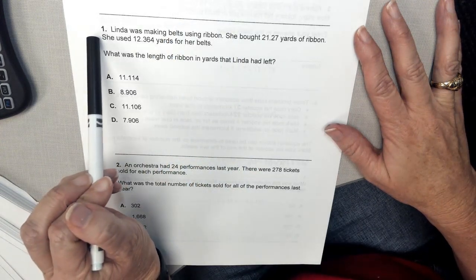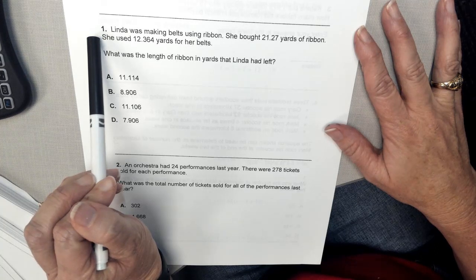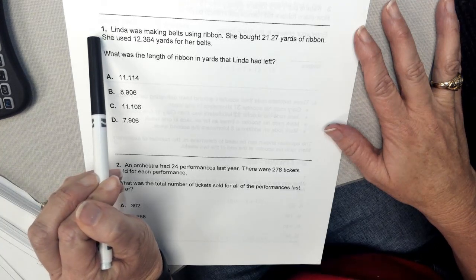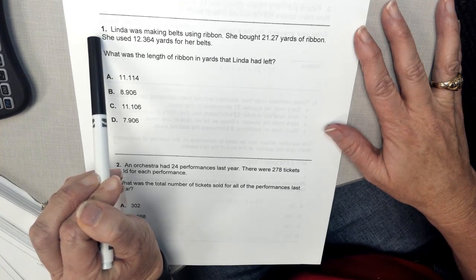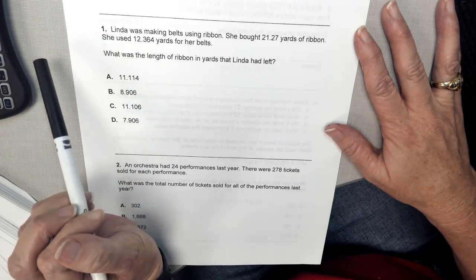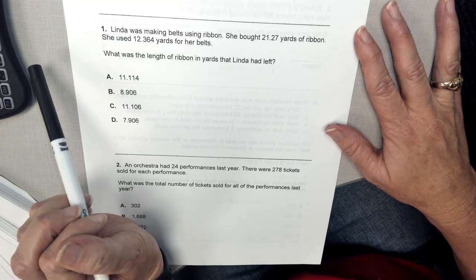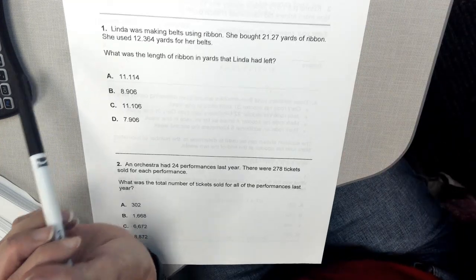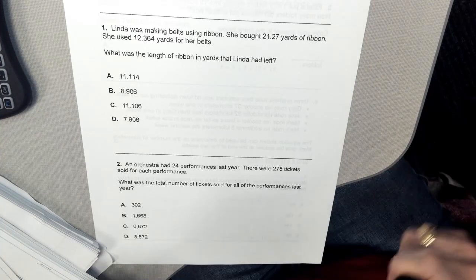And number one says, Linda was making belts using ribbon. She bought 21 and 27 hundredths yards of ribbon. She used 12 and 364 thousandths yards for her belts. What was the length of the ribbon in yards that Linda had left?